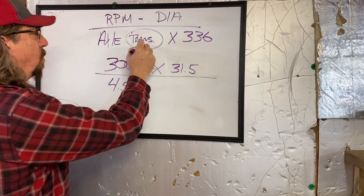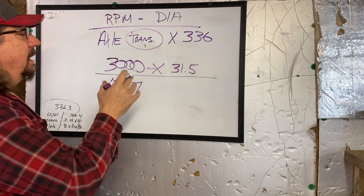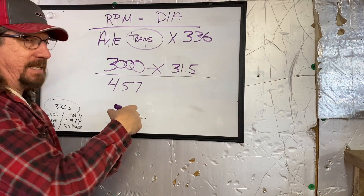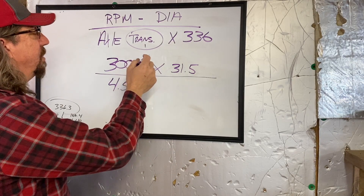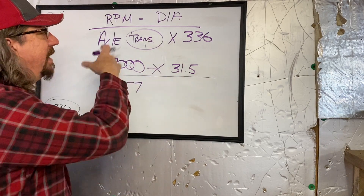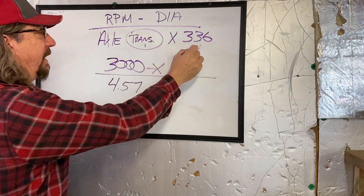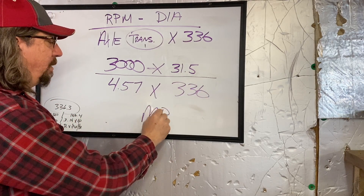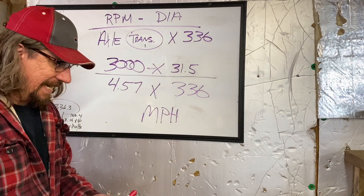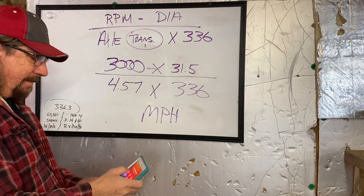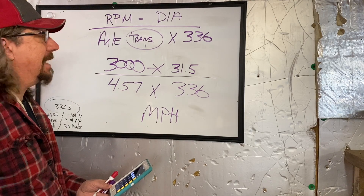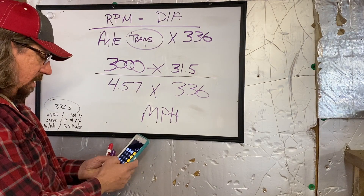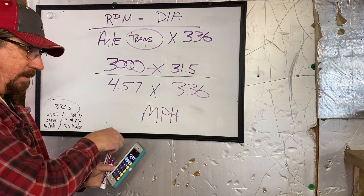I'm going to make the transmission in this one a one-to-one, so there's no reduction. Automatic transmissions actually do have about a two percent slippage — you can calculate that in using a factor of 0.002 — but I want to keep this simple. So we're going to go straight to our calculated number of 336 and come up with a miles per hour. I know what this car turns going down the road at 60. So: 3,000 times 31.5 equals 94,500. That's the number we're looking for.